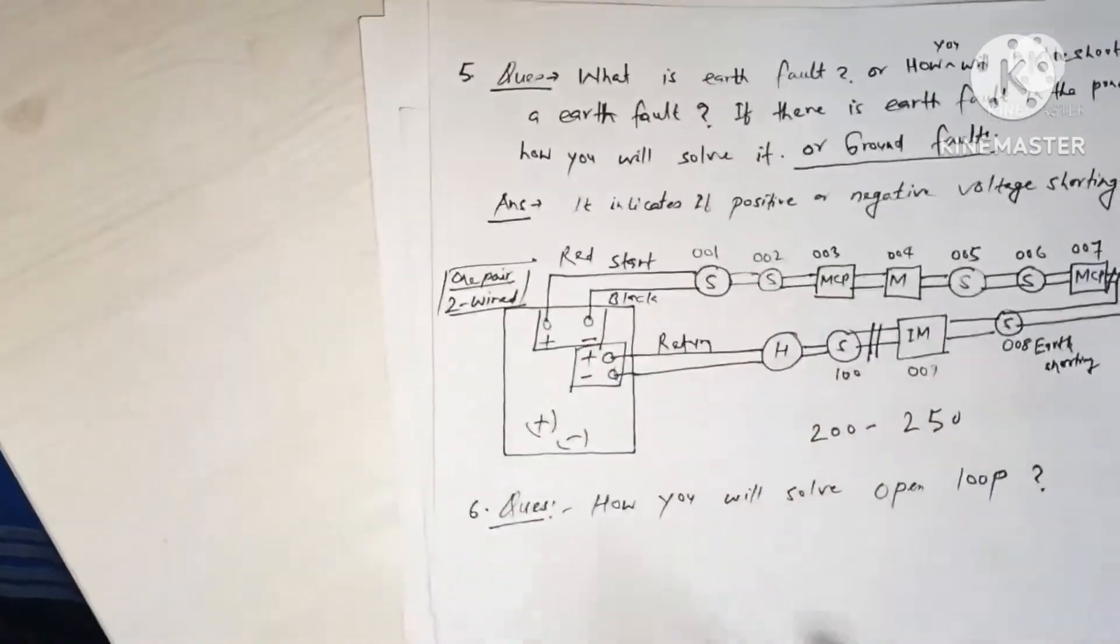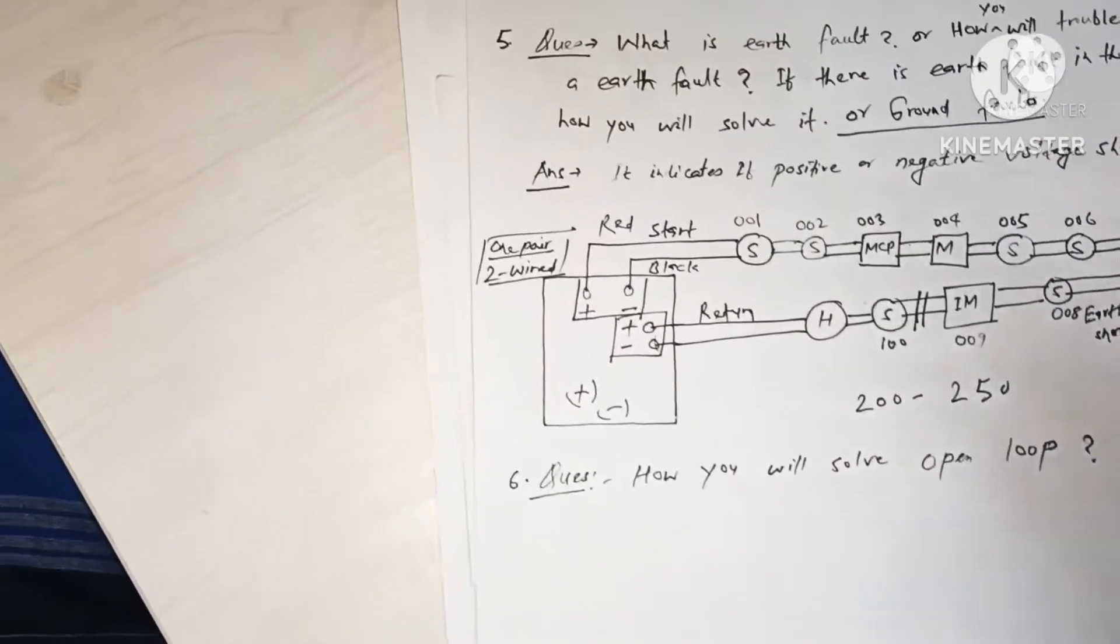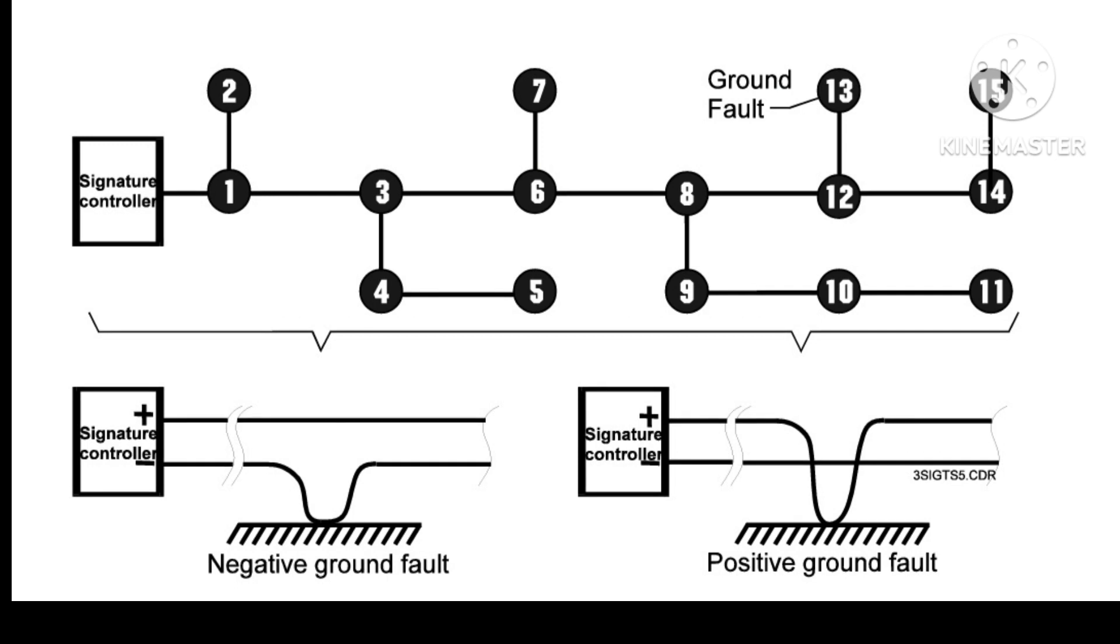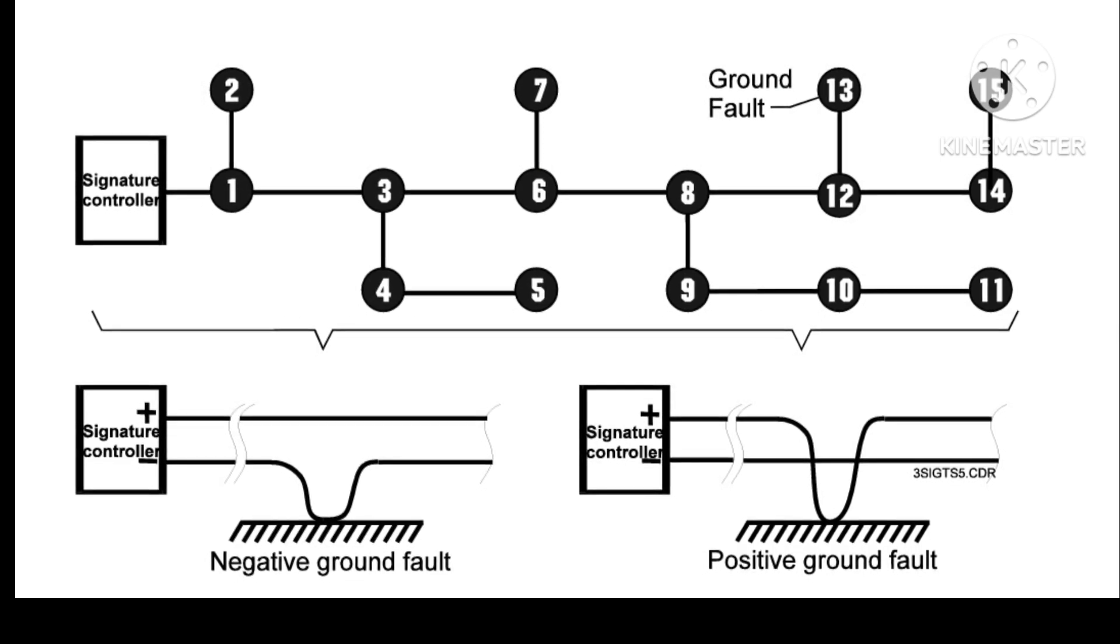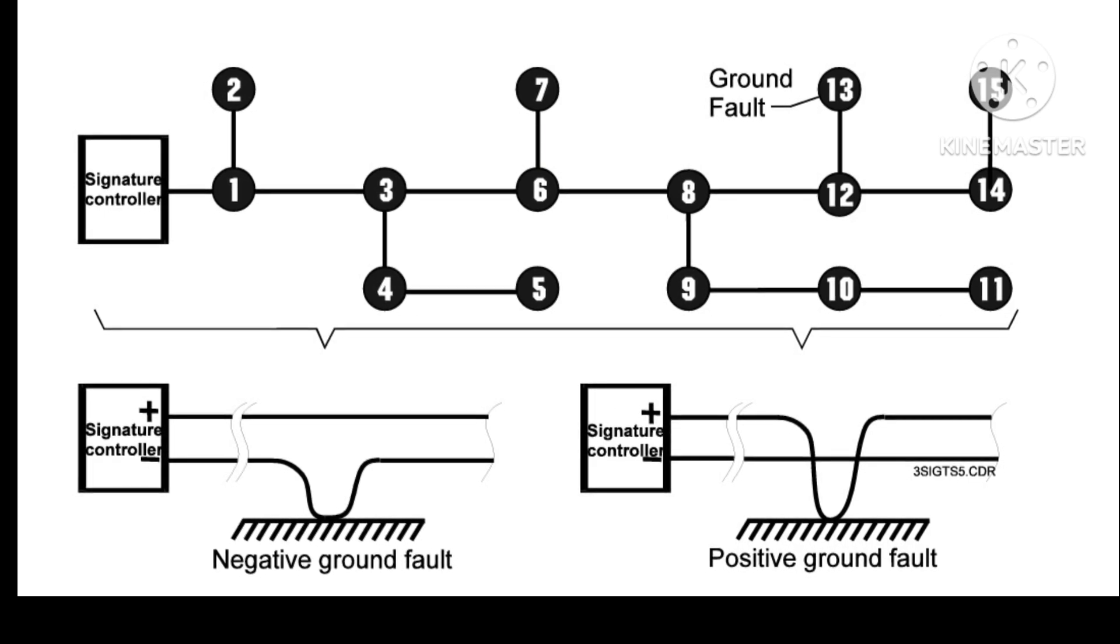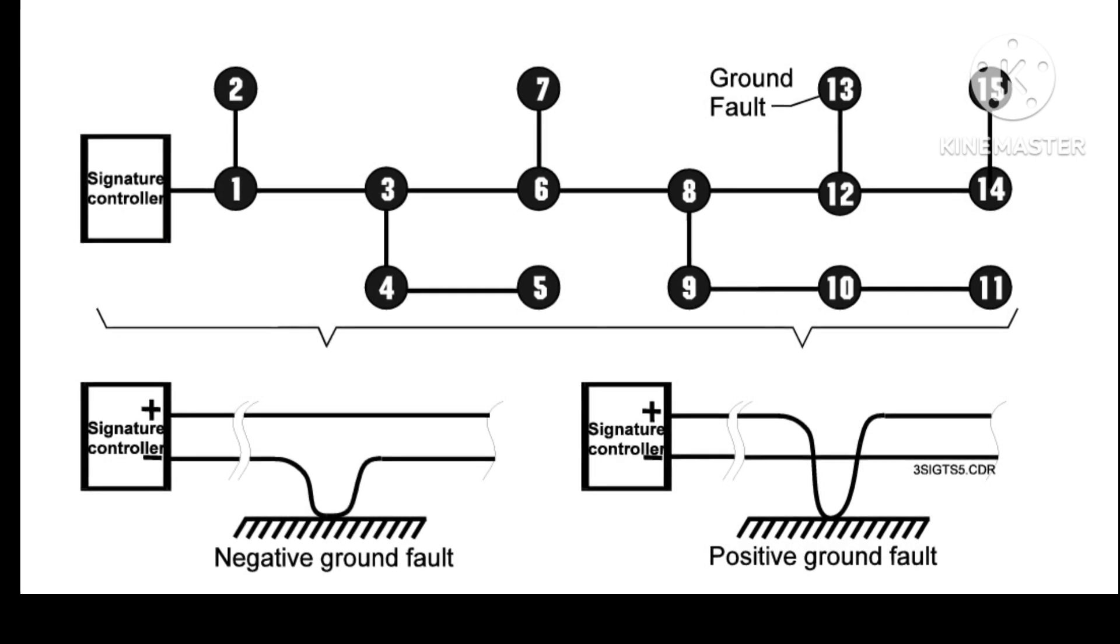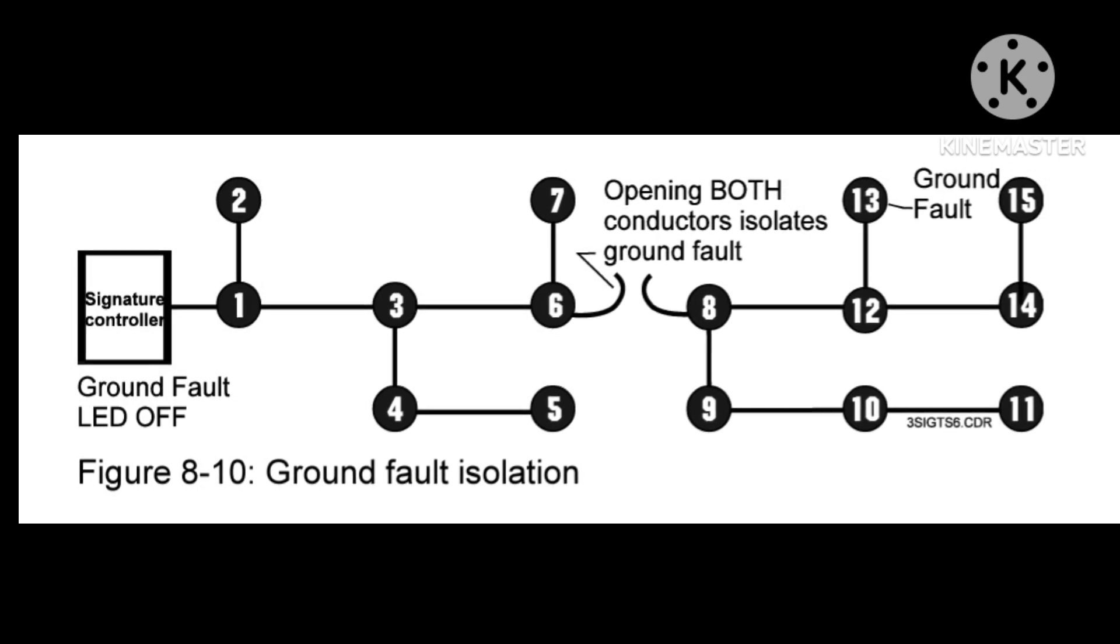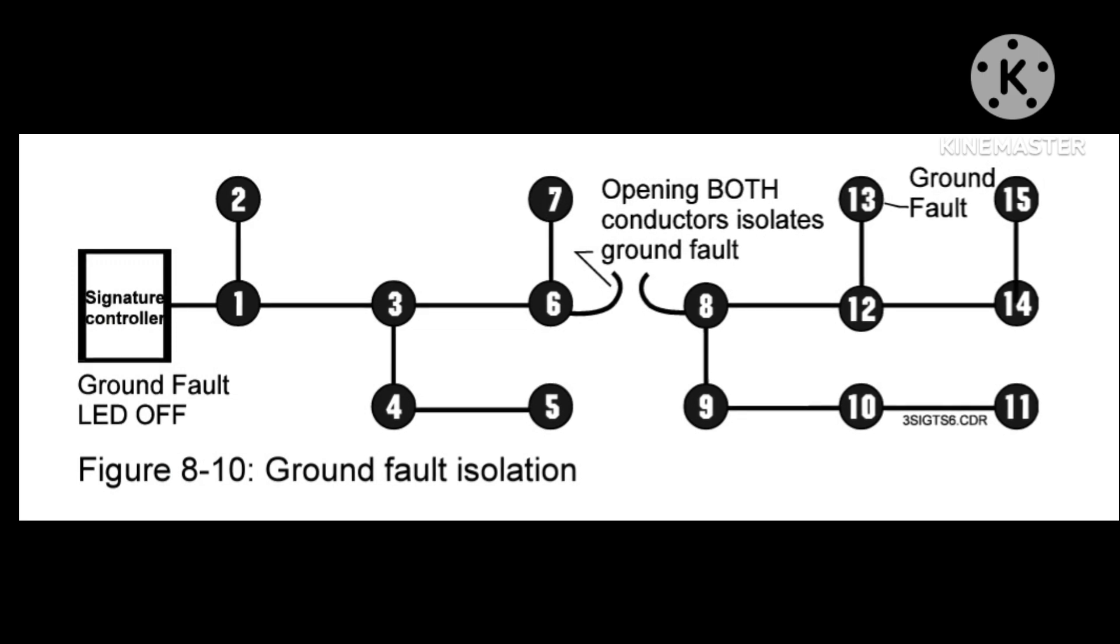And also water causes ground fault. So by this way you can easily - yes friends, so by this isolation and elimination method, we will divide our loops in small partitions and we can easily find the ground fault, either it is positive or negative. This ground fault isolation method you can easily use to find it.